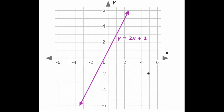Now we will do this example together. I can see that the equation of my line is y equals 2x plus 1. It is in slope-intercept form, which means I can refer to y equals mx plus b. In the place of m is 2, so m equals 2, meaning my slope is 2, or my line is increasing by 2 each time. In the place of b is 1, so b equals 1, meaning the y-intercept is 1 — or in other words, b is my beginning number, so when x equals 0, y equals 1.